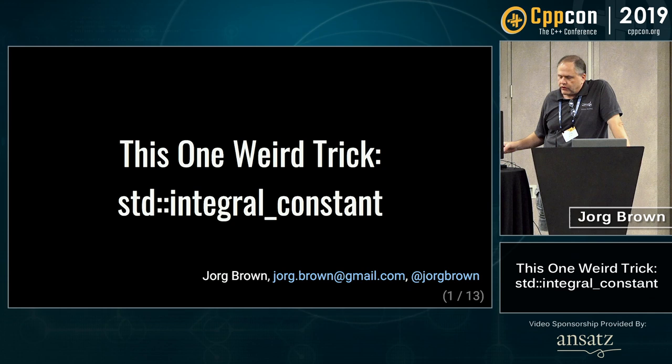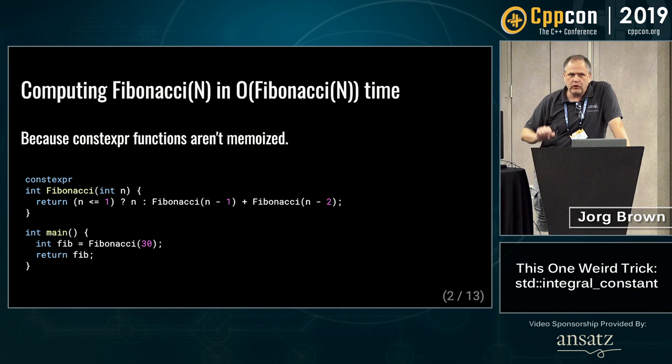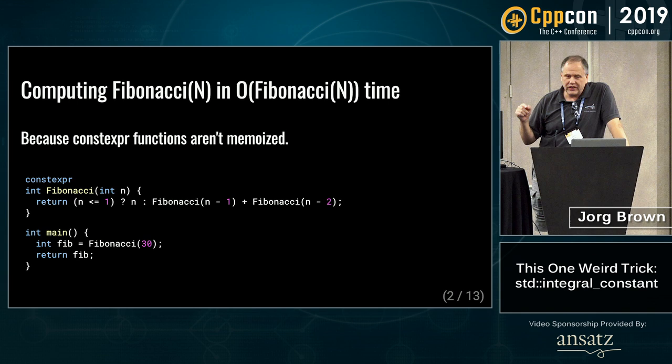Let's take a simple example — this is without integral_constant. This is a Fibonacci routine. It's declared constexpr. However, if you actually run it, it will take quite a long time. This is one of the few functions where computing Fibonacci this way will take order-of-Fibonacci time. The reason is that the constructor or function isn't actually going to be inlined.